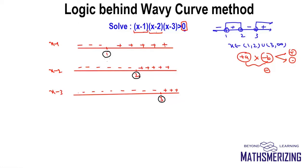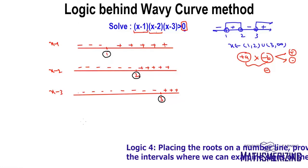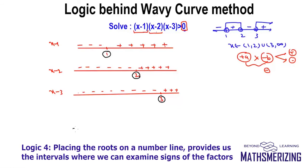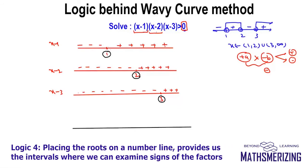The fourth step is: place the roots on a number line in order. I'll draw a number line and place the three roots in order. My expression contains three factors with critical points 1, 2, and 3, so I mark 1, 2, and 3 on the number line.